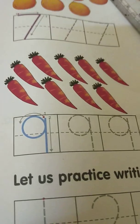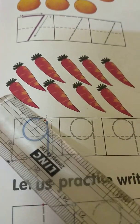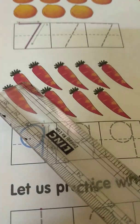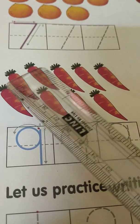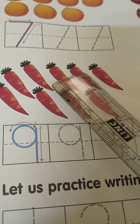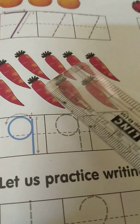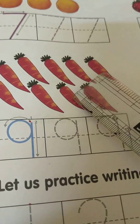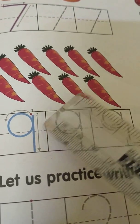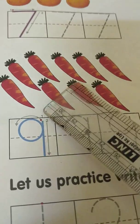Next, how many carrots are there? One, two, three, four, five, six, seven, eight, nine. So here I write, nine.